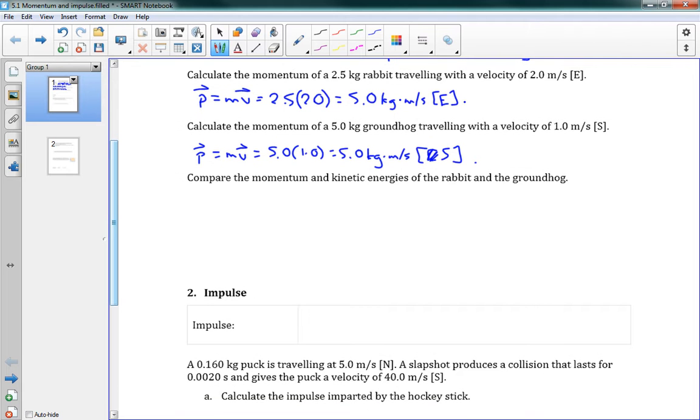Now the next question says compare the momentum and the kinetic energies of these two, of the rabbit and the groundhog. So for the rabbit, we already found that the momentum was equal to 5.0 kg meter per second east. And we'll compare that to its kinetic energy. So Ek equals 1/2 mv squared. So we've got 1/2 times the mass was 2.5, and we had 2.0, we'll square that. So we get 1/2 times 2.5 times 4, so we get 5.0 joules. So it looks like that has the same momentum and kinetic energy, which is interesting.